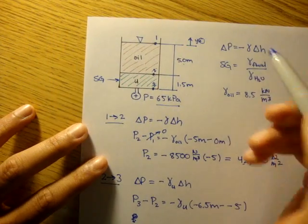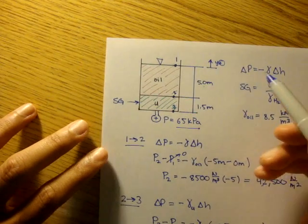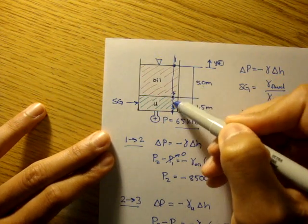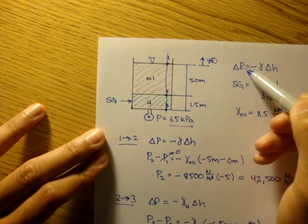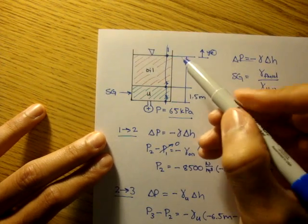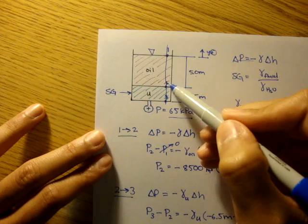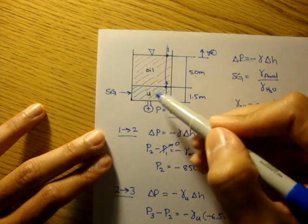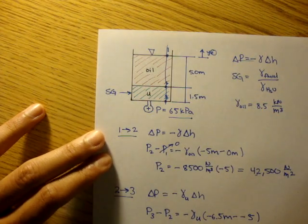Just to reinforce how to use this equation: you draw a line, and every time you change liquid you do a pressure analysis. So we did one from one to two, and then we used the pressure analysis from two to three to find the specific gravity of the unknown liquid.